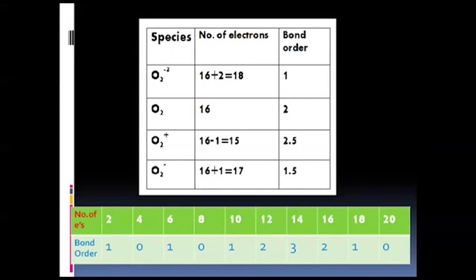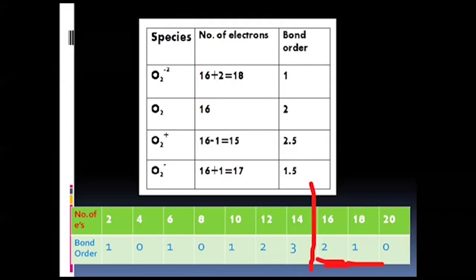Now we apply our mool mantra: 10, 10, 12, 32, 10. This tells us the bond order of the species with 18 electrons is 2.5. For 17 electrons, which falls between 16 and 18, the bond order will be the average of 1 and 2 — wait, average of 2 and 3 — that is 2.5... rather, O2⁻ with 17 electrons gives bond order 1.5. So our answer is O2⁻ — easily solved!